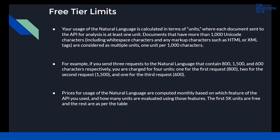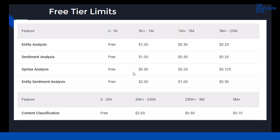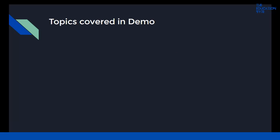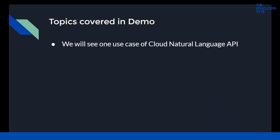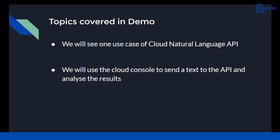Prices for use of the Natural Language API are computed monthly based on which features of the API are used and how many units are evaluated. The first 5,000 units are free, and the rest are priced as per the table, which gives pricing details in terms of cost. In the demo, we will see one use case of Cloud Natural Language API and use the cloud console to send text to the API and analyze the results. That was a quick overview — thank you and I'll see you in the next lecture.